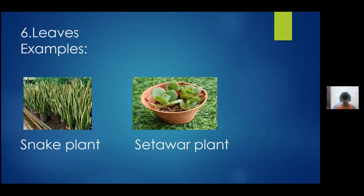Now I'll explain what tissue culture is and how it works. First, you have a tree — let's say a mango tree. Choose one of the branches, then sieve a little bit of that part of the branch and cover it with soil. Then start to tie it with plastic, and to keep the plastic from falling, tie it with any string or something.